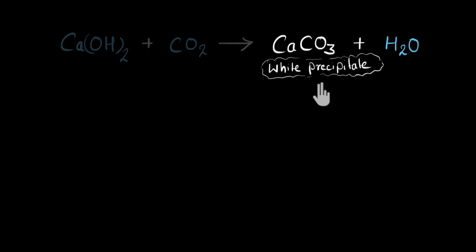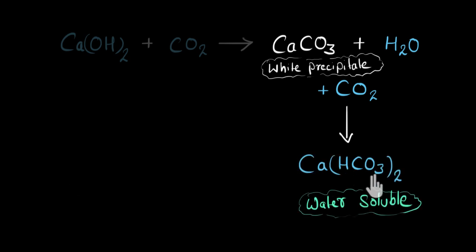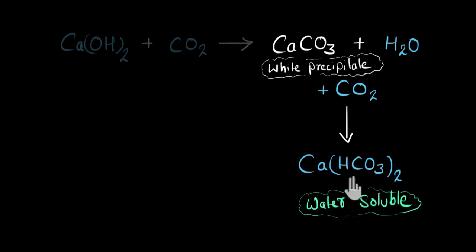But if I pass more and more carbon dioxide, it reacts with calcium carbonate and water, and all of these combine to form calcium hydrogen carbonate, which is soluble in water — and that's why it disappears and the solution becomes colorless again. If you dissolve a little salt in water, it mixes well and we get a colorless solution. Similarly, when calcium carbonate combines with carbon dioxide and forms calcium hydrogen carbonate, it dissolves in water and we can no longer see anything in the solution — the solution looks transparent.